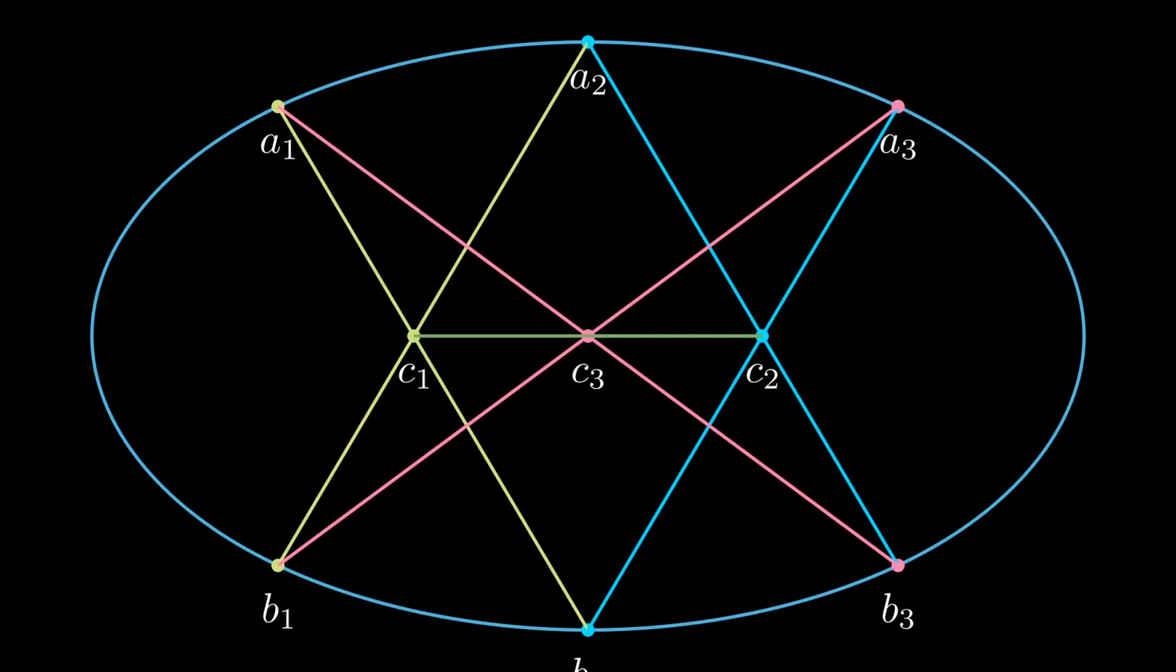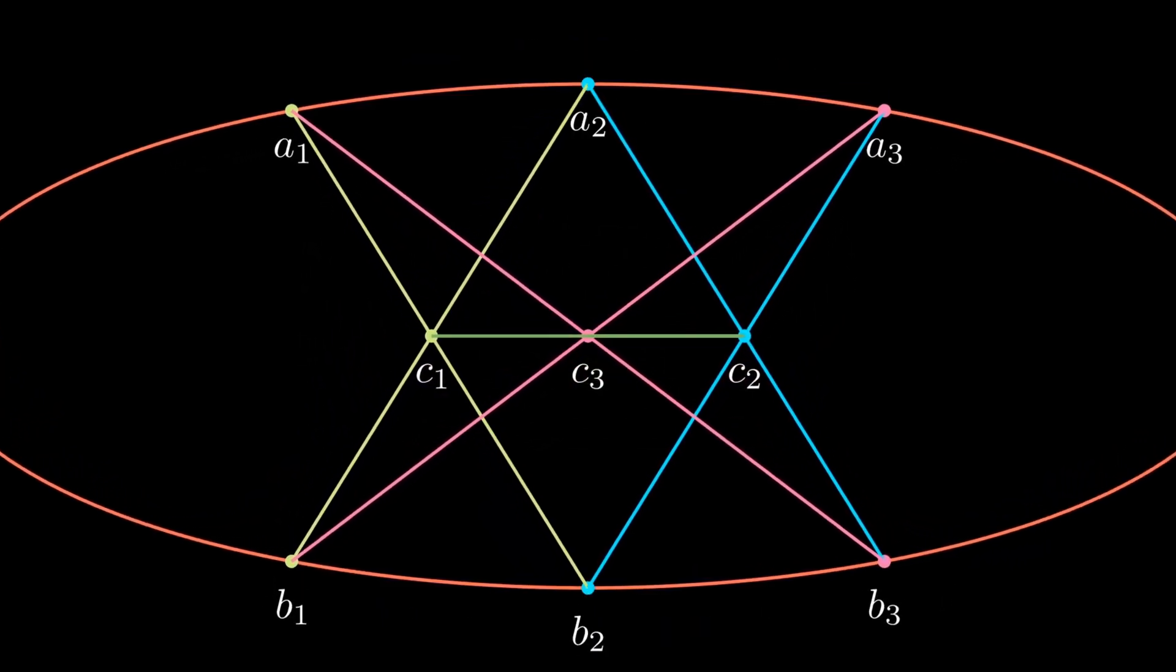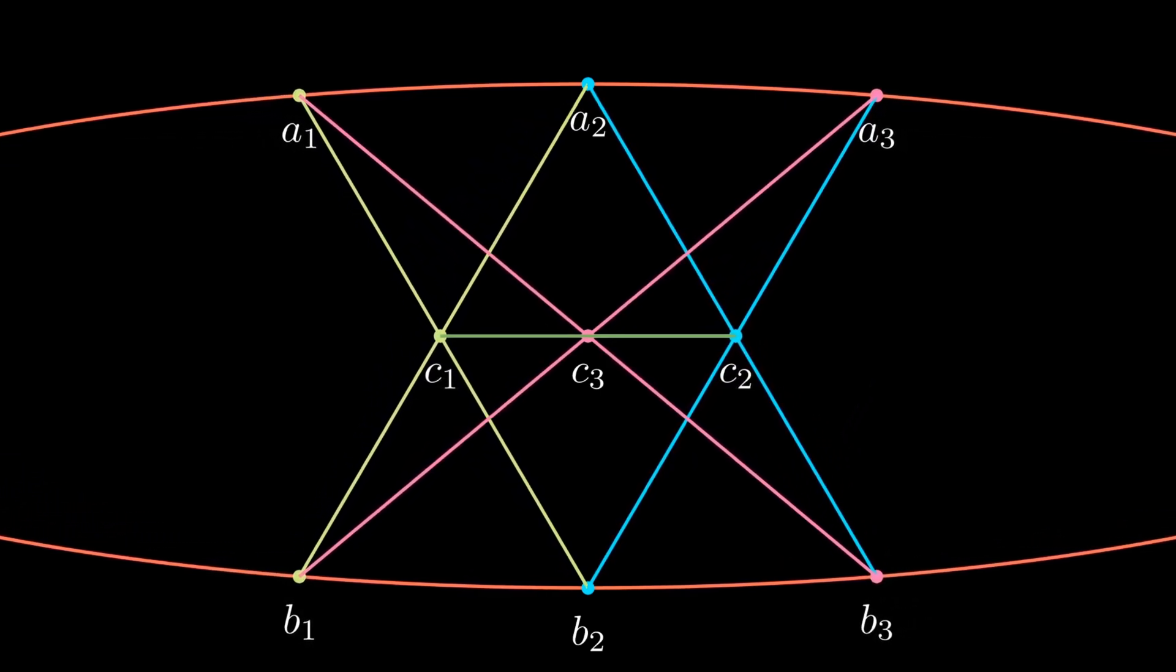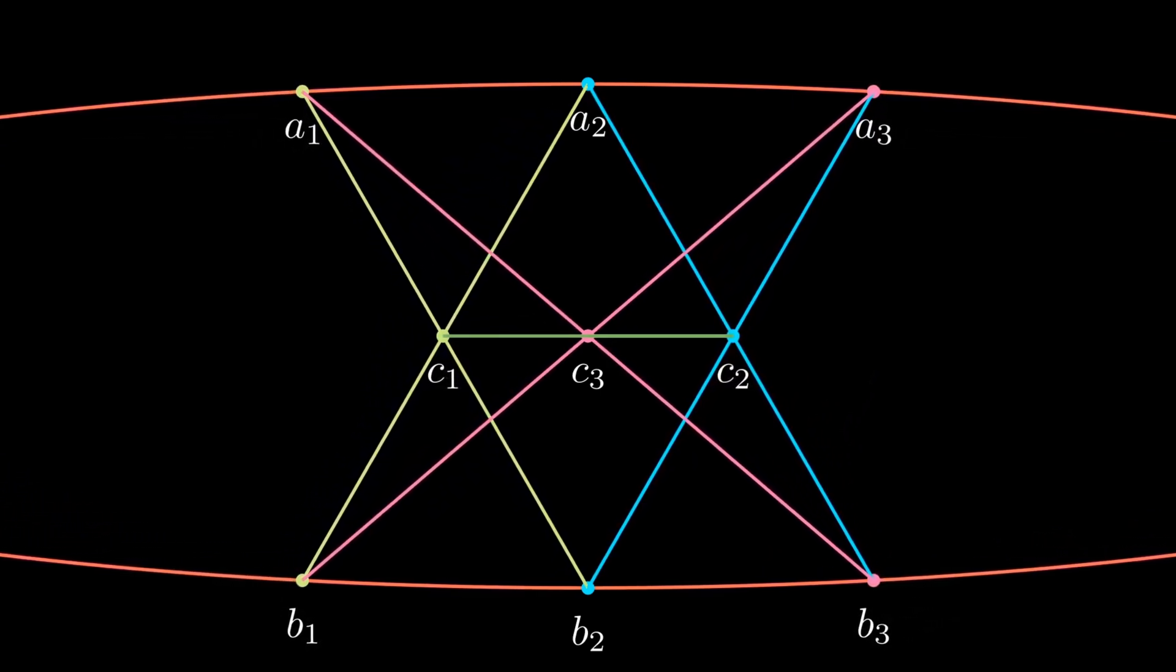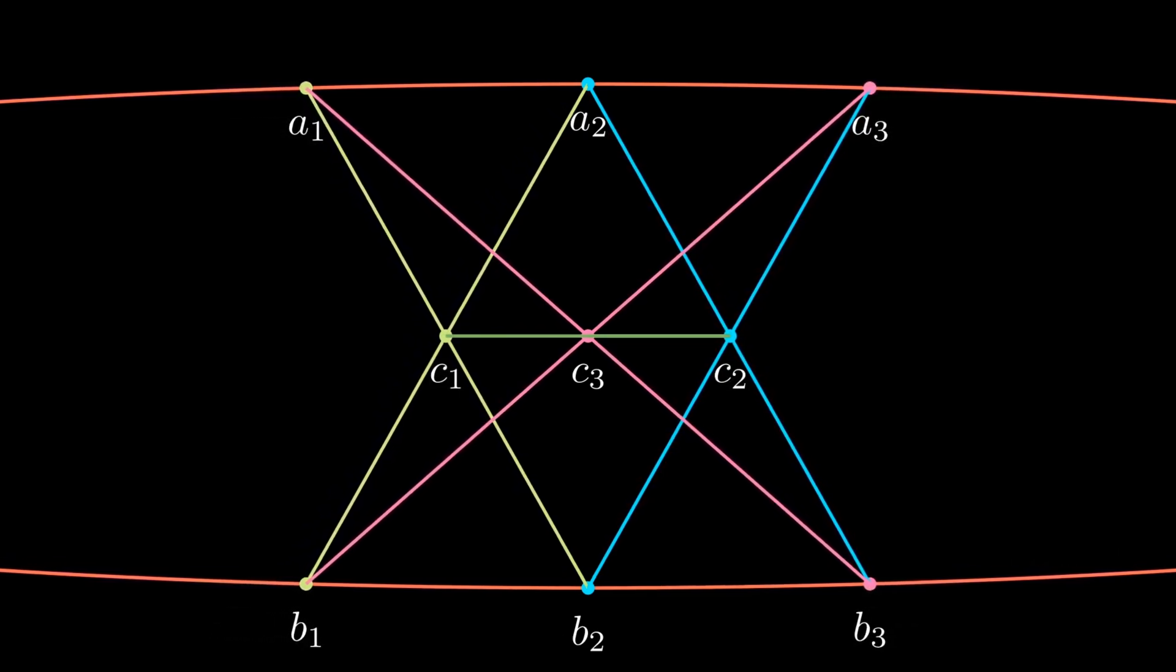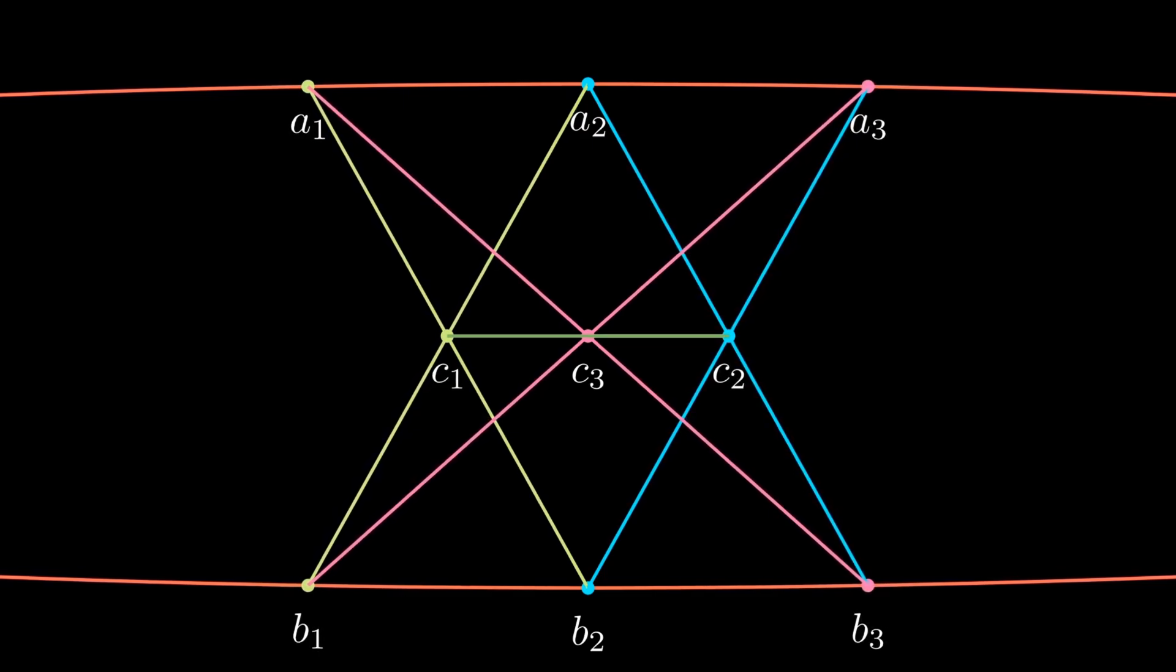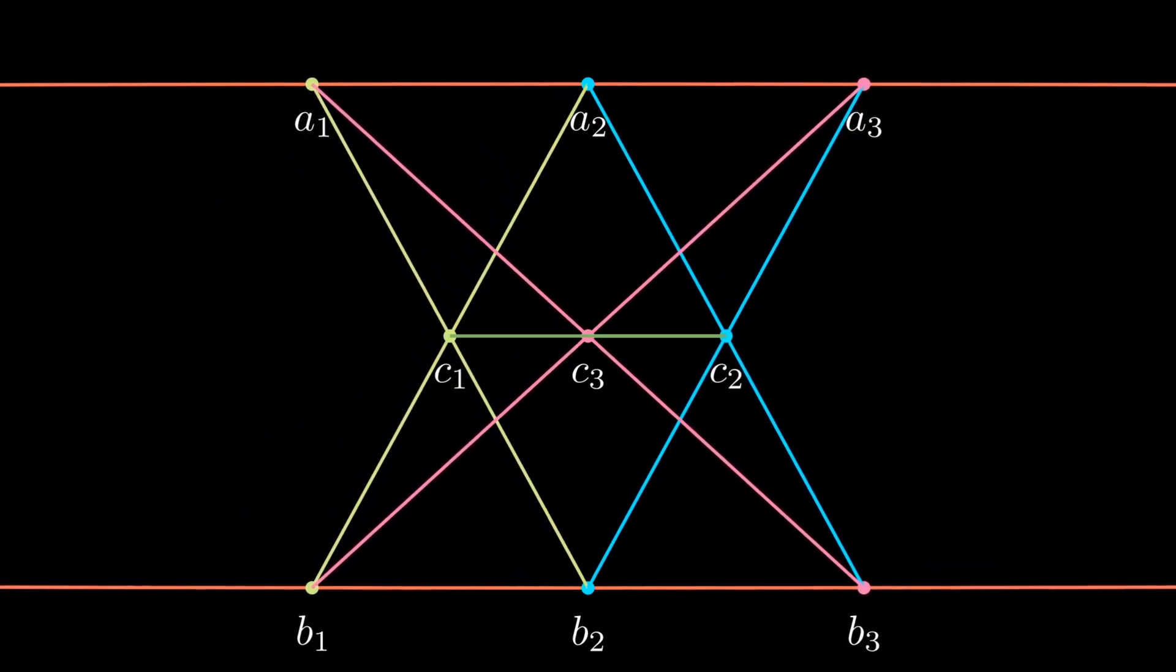This is the connection between Pascal's theorem and Pappus's theorem. If you take the ellipse and make it wider and wider, you see what we are getting—we are getting two lines which extend up to infinity. If you infinitely extend the ellipse, you thereby get Pappus's theorem from Pascal's theorem.